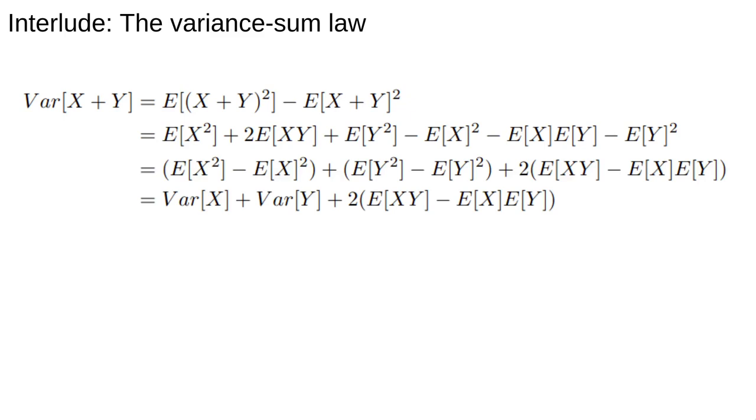Then grouping things together and using the definition of variance. The final term here defines something called covariance, which is very closely related to correlation. Here we're going to assume that the samples are uncorrelated or independent. In this case, it can be shown that the covariance vanishes.